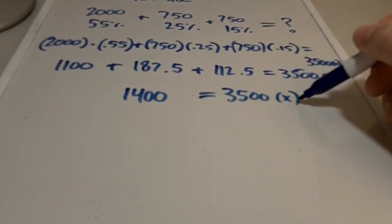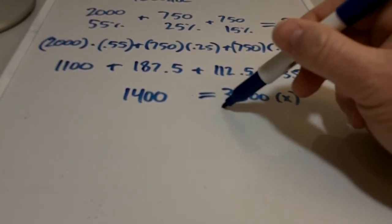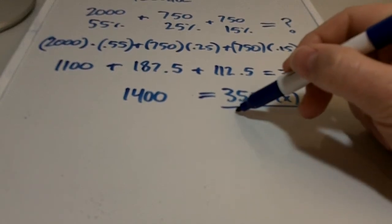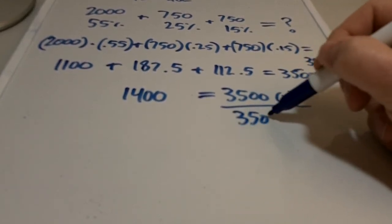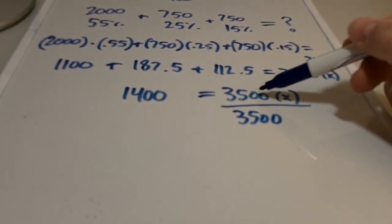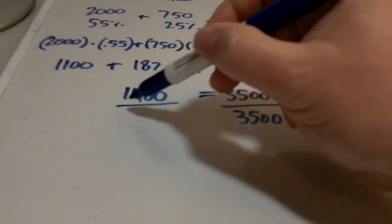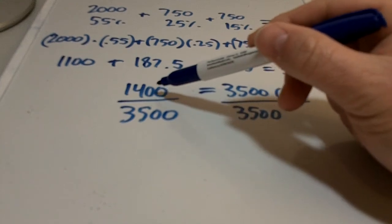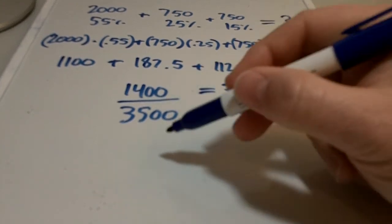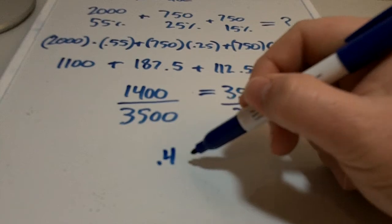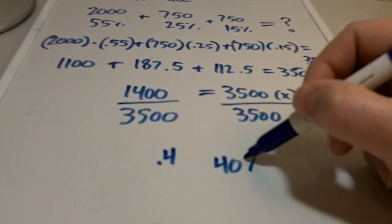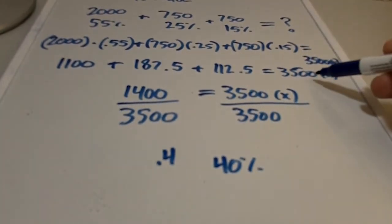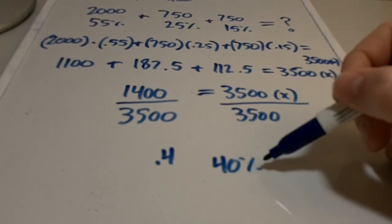Down here, we want to isolate this x. So remember again, we want to divide each side of the equation by 3,500, since it's the coefficient of x. So when we divide 1,400 by 3,500, what we get is 0.4 or 40%. So we're going to have 3,500 milliliters of 40% alcohol.